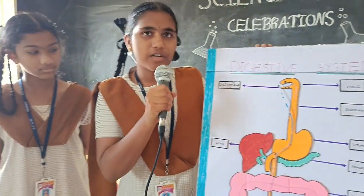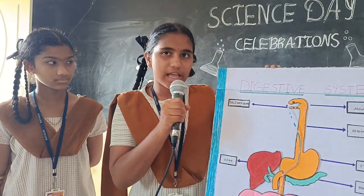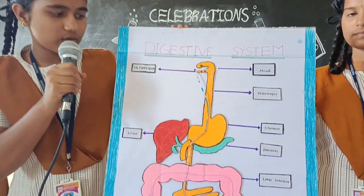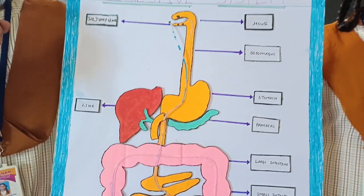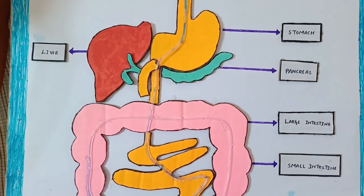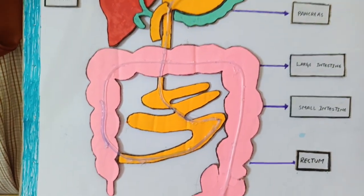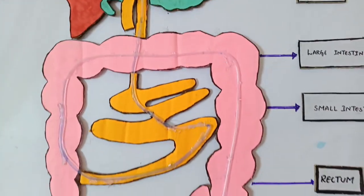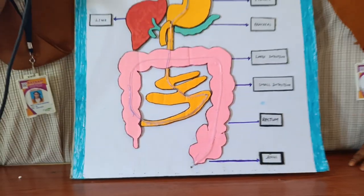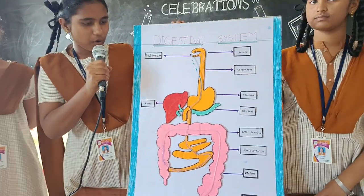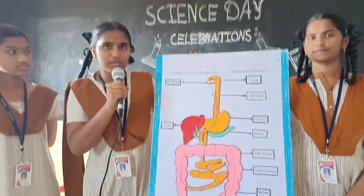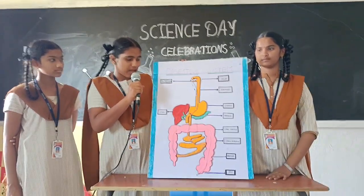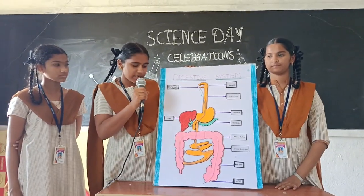At the stomach, food is churned with the help of HCL and gastric juice. Now the food is in the form of a semi-solid solution. Most proteins are divided into small molecules with the help of the enzyme pepsin. Pancreatic juice secreted from the pancreas is helpful in digestion of proteins. Fats can be digested by the process of emulsification, with the help of bile juice which is secreted in the liver.